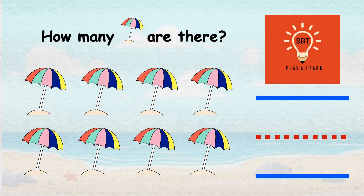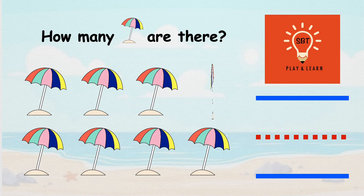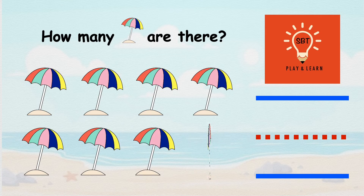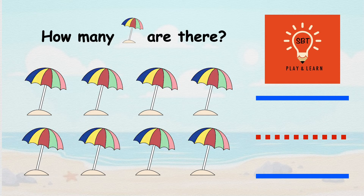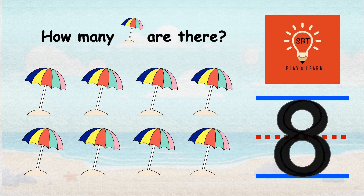How many beach umbrellas are there? Ready? Count! 1, 2, 3, 4, 5, 6, 7, 8. There are 8 beach umbrellas. Let's write number 8 — make an S and climb back up. Number 8.